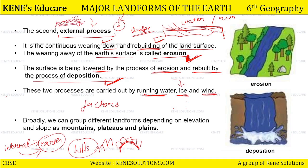The external process of making the landform is possible by the factors such as running water, ice, and wind. Ab agar ham landforms ko detail mein padhenge — arth pe kitnay type ke landforms ho te hai. Broadly, we can group different landforms depending on the elevation and the slope — woh kitna uccha hai, uska elevation kya hai aur uski slope kitnay hai. Is basis pe ham landforms ko differentiate kertate hai. Teen aise landforms ho te hai jo elevation mein aur slope mein kaafi different ho te hai: number one mountains, number two plateaus, and number three plains.